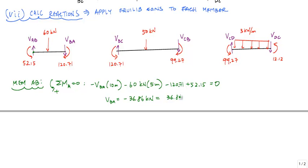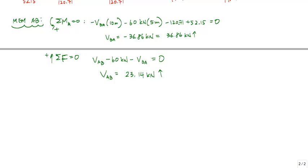And then if I do sum of the forces in the vertical equal to 0, we'll just get that VAB minus 60 kilonewtons minus VBA equal to 0. And in this VBA, I'm going to substitute that negative 36.86 into here because my equilibrium equation reflects my drawing. If I work that math out, I will get that VAB, this vertical, is equal to 23.14 kilonewtons. And since I got a positive result, that means that that direction, the way I drew it, is good. So now if we just repeat that same equilibrium process for members BC and CD, here's what will happen.